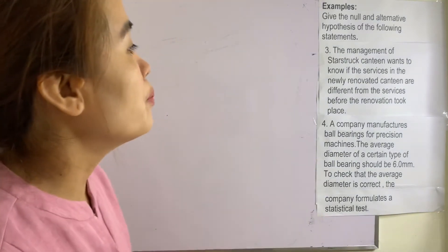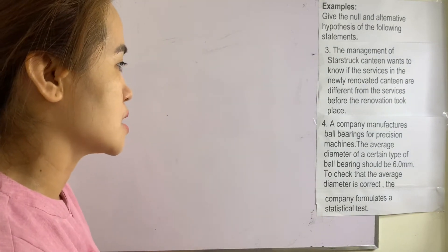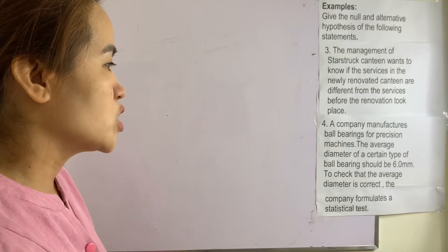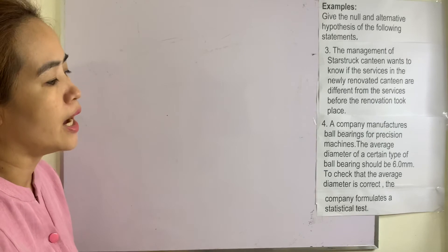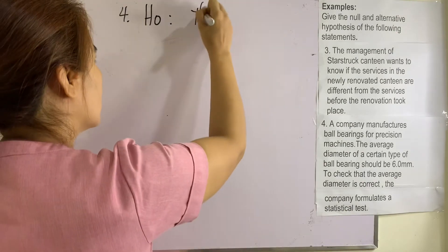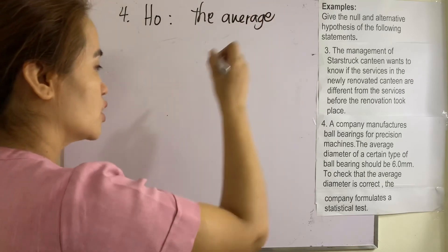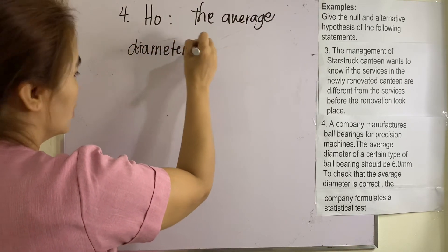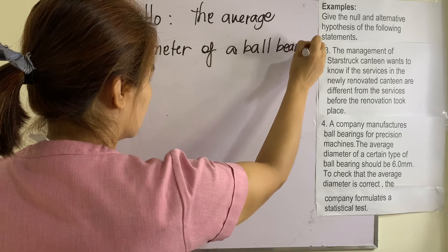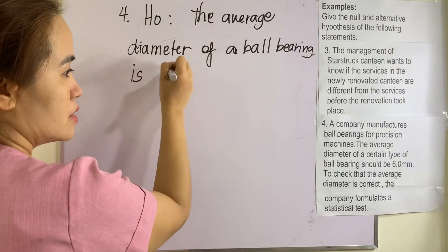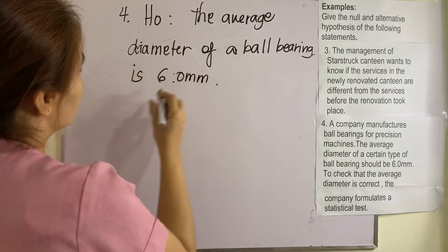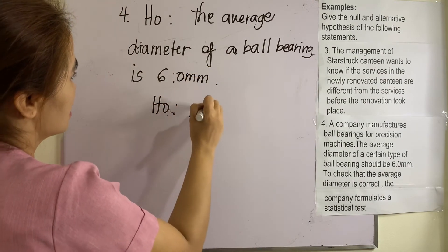Number four: a company manufactures ball bearings from precision machines. The average diameter of a certain type of ball bearing should be 6 mm. To check that the average diameter is correct, the company formulates a statistical test. So the null hypothesis is: the average diameter of a ball bearing is 6 mm. In symbol, mu equals 6 mm.